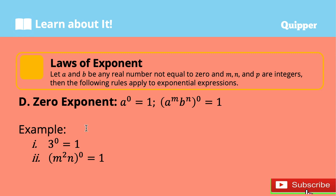The 4th rule is the Zero Exponent. If we have an exponential form raised to the power of 0 — that is, a to the power of 0 — the answer is always equal to 1. Whatever the number raised to the power of 0, the answer is always 1. Even if it is a group, such as a to the power of m times b to the power of n, all raised to the power of 0, that is also equal to 1. For example, 3 to the power of 0 equals 1, and m squared times n, all raised to the power of 0, is also equal to 1.